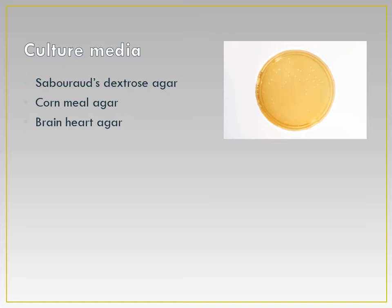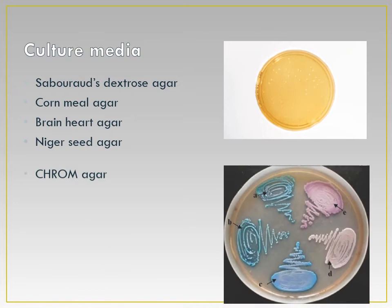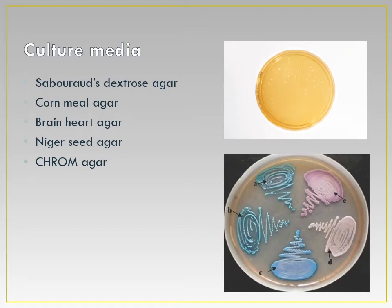Brain Heart Infusion is an enriched medium useful for fastidious fungi. Niger seed agar is useful for the selective growth of Cryptococcus. CHROMagar is a selective as well as differential medium for various Candida species, allowing differentiation of species according to the color produced on the medium.